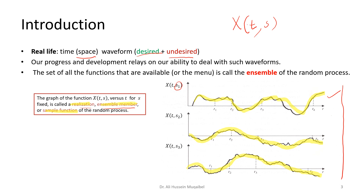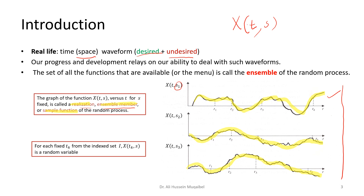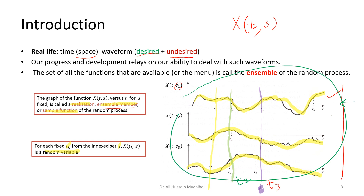That's if we fix s. Also, if we fix the time — fix t at one time instant — the values across all realizations give you a random variable. Any vertical cut here, across all these realizations at a single time, gives a random variable. If you are just interested in one instant of time — t2 or t3 — you have a random variable. If you look at one of these, you have a sample realization. If you consider everything — all students with all GPAs and how they change with time and relate to each other — that's a random process.